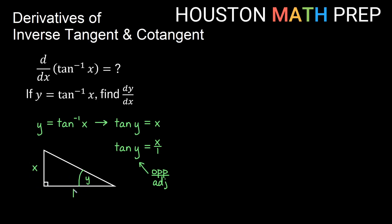If we use the Pythagorean theorem to solve for the hypotenuse, we take each leg squared and add them together. Solving that, we get that the hypotenuse is the square root of 1 plus x squared.